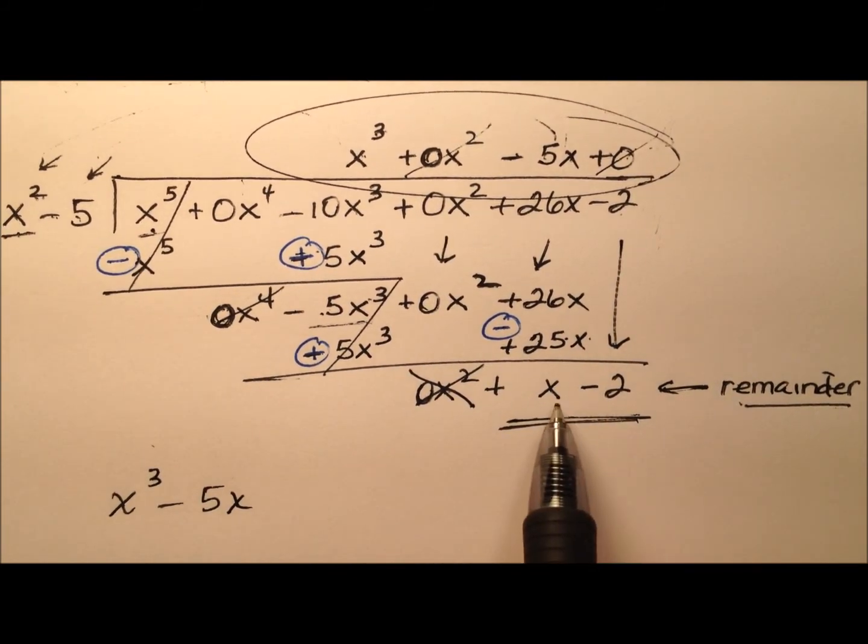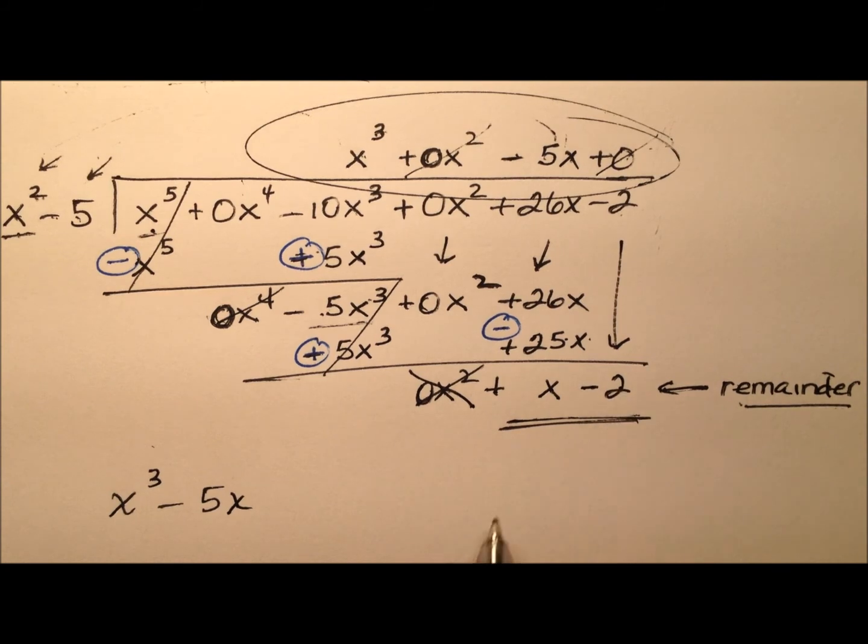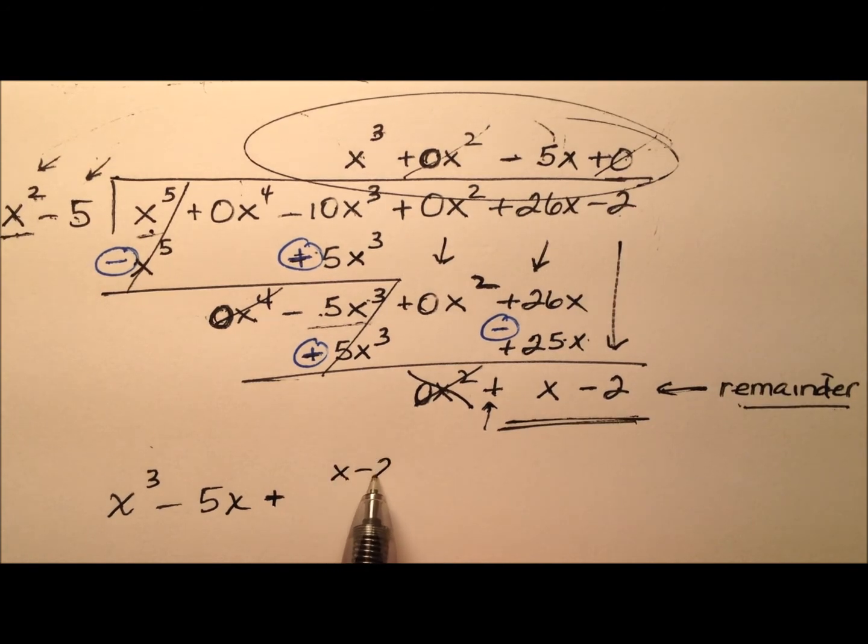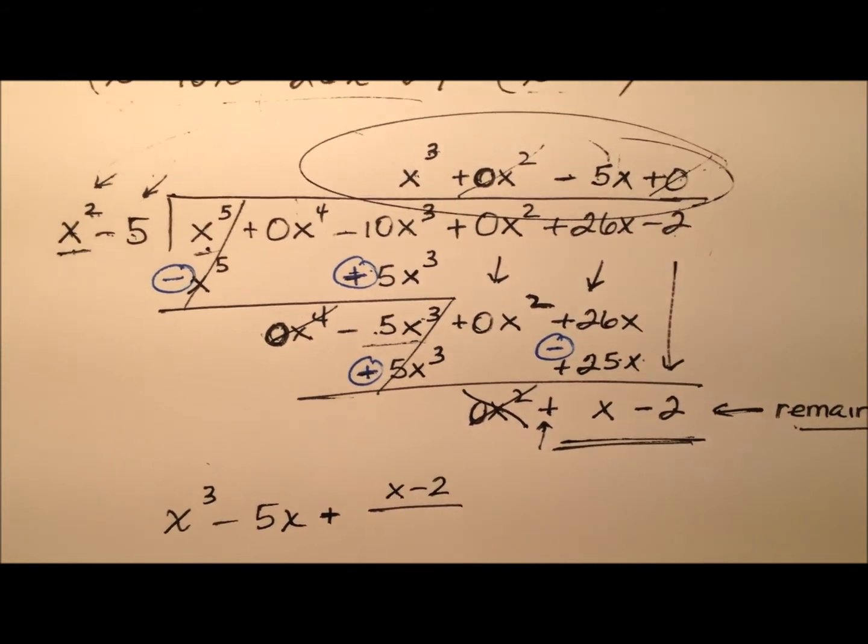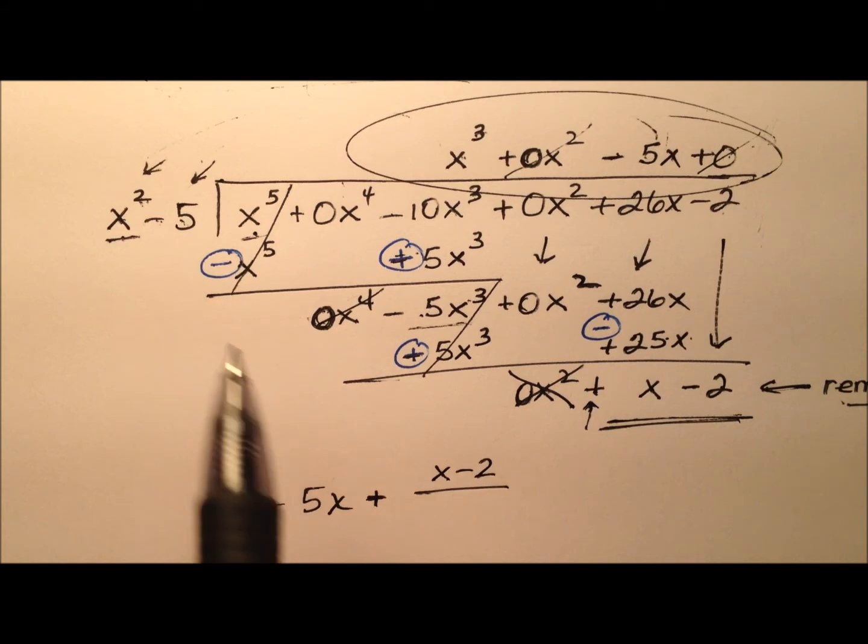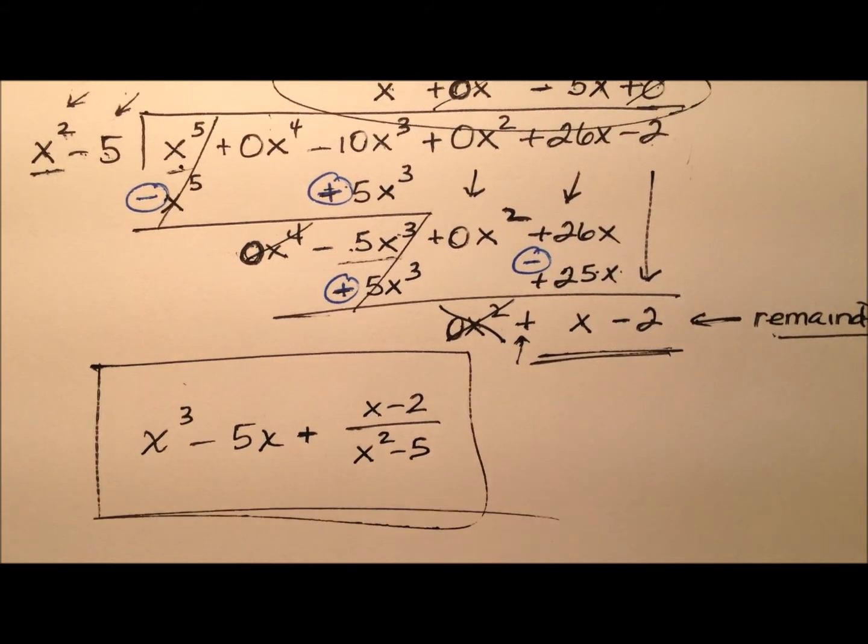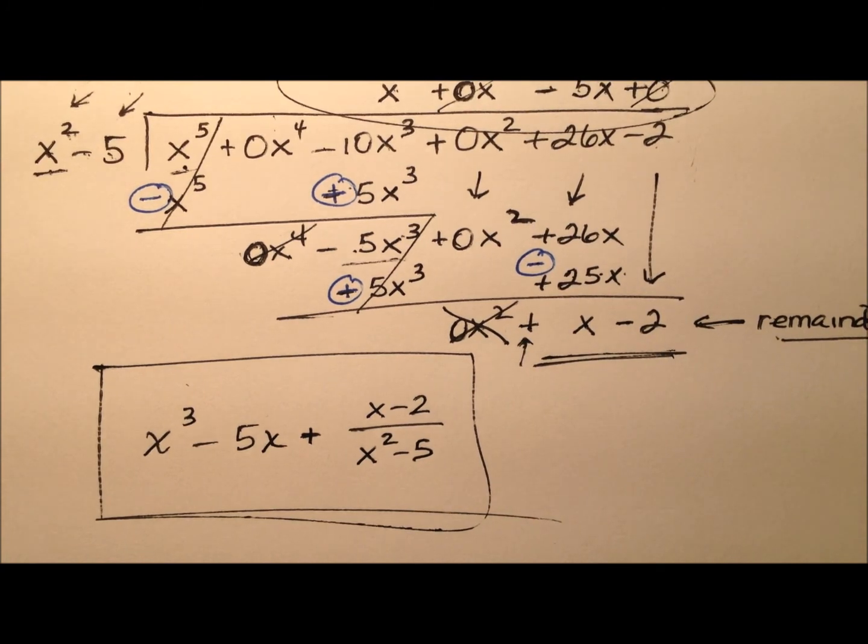So our remainder then was positive x minus 2. So because it leads with this plus I'll go ahead and write plus and then it's x minus 2 over the divisor of x squared minus 5, x squared minus 5.